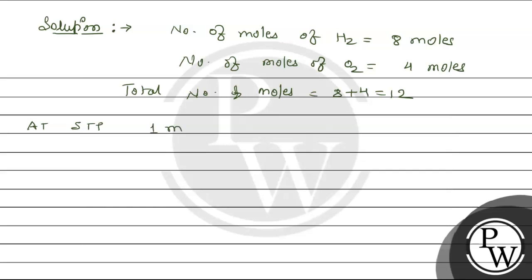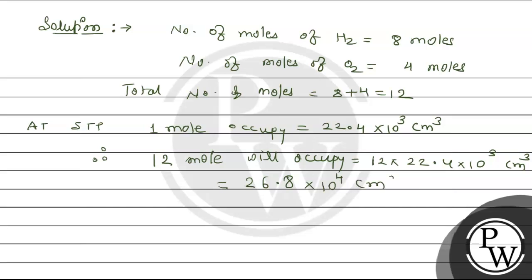At STP, 1 mole occupies 22.4 × 10³ cm³. So 12 moles equals 26.8 × 10⁴ cm³.